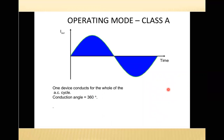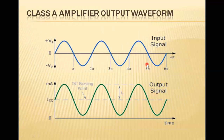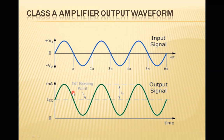The conduction angle for Class A is 360 degrees. You can see in the diagram that if this is the input to the Class A amplifier, the output signal has a conduction angle of 360 degrees.